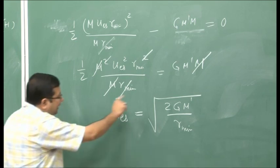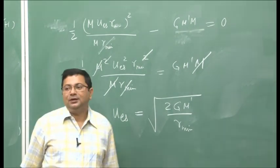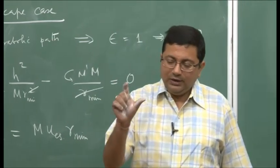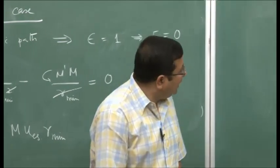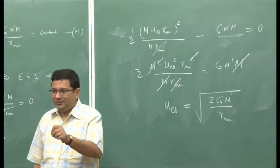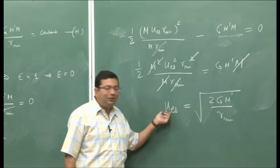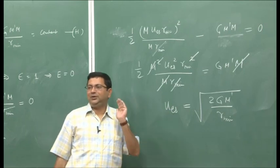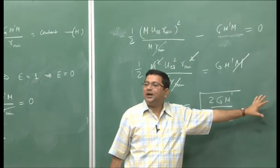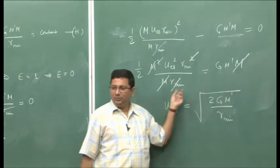This gives an expression for escape velocity in terms of the universal gravitational constant, the mass of the planet, and the distance of the vehicle from the planet's center. If we launch from the Earth's surface, r-min equals the radius of Earth, and we can find the escape velocity from Earth. This is the velocity with which the vehicle must be launched to escape the gravitational force.